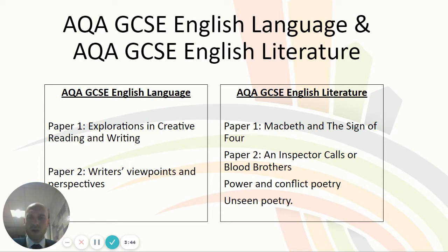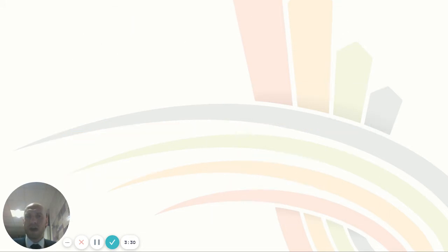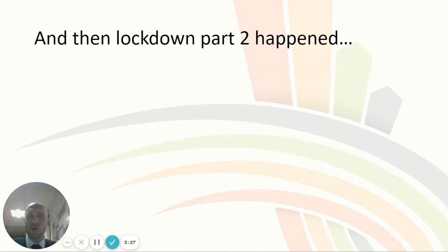When we came back in September it was decided that students had missed so much learning that we would no longer assess students on their knowledge of Power and Conflict poetry. Then lockdown part two happened, and suddenly we had to re-evaluate everything — in particular, the fact that the government had decided to suspend exams as we know them and for teachers to actually provide grades for students.